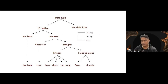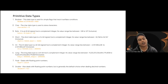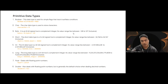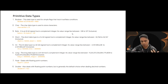Let's talk about the primitive data types. First, we have boolean. This data type is used for simple flags that track true or false conditions — boolean always gives a value of either false or true. The second one is char, which is used to store characters. We'll declare all these variables after I explain these data types.